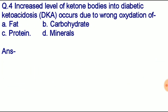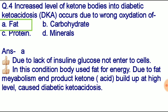Question number four: increased level of ketone bodies in diabetic ketoacidosis occurs due to wrong oxidation of — option A: fat, option B: carbohydrate, option C: protein, option D: minerals. Answer: option A, fat. Due to lack of insulin, glucose cannot enter the cell. In the absence of glucose, the cell utilizes fat and metabolizes it. The end product of fat metabolism is ketone, which is acidic. Excessive fat metabolism causes ketone bodies to build up, resulting in diabetic ketoacidosis.